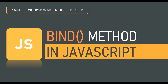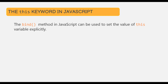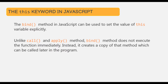In this lecture, you're going to learn about the bind method in JavaScript. In the last lecture, we learned that we can use call and apply methods to set the value of the 'this' variable explicitly to point to another object. We can do the same thing with bind method, but the difference is that bind does not execute the function immediately. Instead, it creates a copy of that function which we can store in a variable and use later in our program.